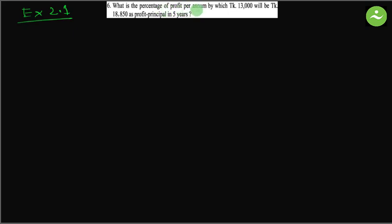As per question, profit plus principal equals 18,850 Taka. We know d equals PRN, so rate of profit r equals d by PN. So how much is profit?